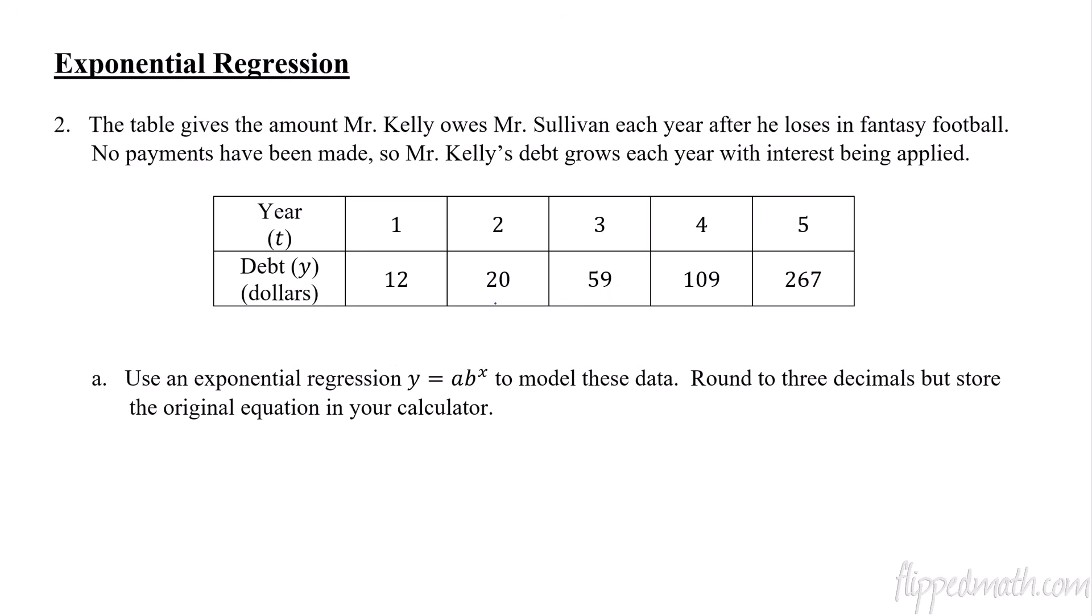Okay, so now into the main part of the lesson, and that is exponential regressions. For this problem, we're looking at Mr. Kelly and Mr. Sullivan. They're in the same fantasy football league, but Mr. Sullivan keeps winning every year, so Mr. Kelly owes him some money. The problem is Mr. Kelly is not good at making payments, so he's not paying Mr. Sullivan, so his debt is growing every year because every year Mr. Kelly loses, and he owes more and more. So Sullivan starts trying to, he charges him interest. So you can see the debt that is growing and getting more and more debt. Okay, so with that, we're going to calculate an exponential regression.